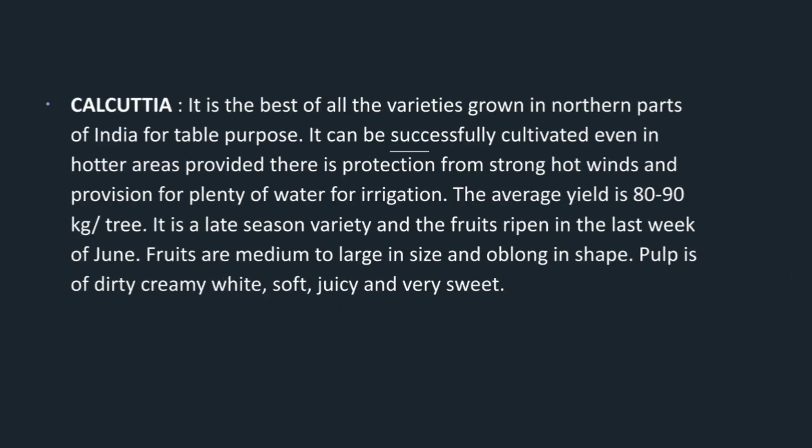Calcutta: It is the best of all varieties grown in northern parts of India for table purpose. It can be successfully cultivated even in hotter areas provided there is protection from strong hot winds and provision for plenty of water for irrigation. The average yield is 80 to 90 kg per tree. It is a late season variety and the fruits ripen in the last week of June. Fruits are medium to large in size and oblong in shape. Pulp is dirty creamy white, soft, juicy, and very sweet.